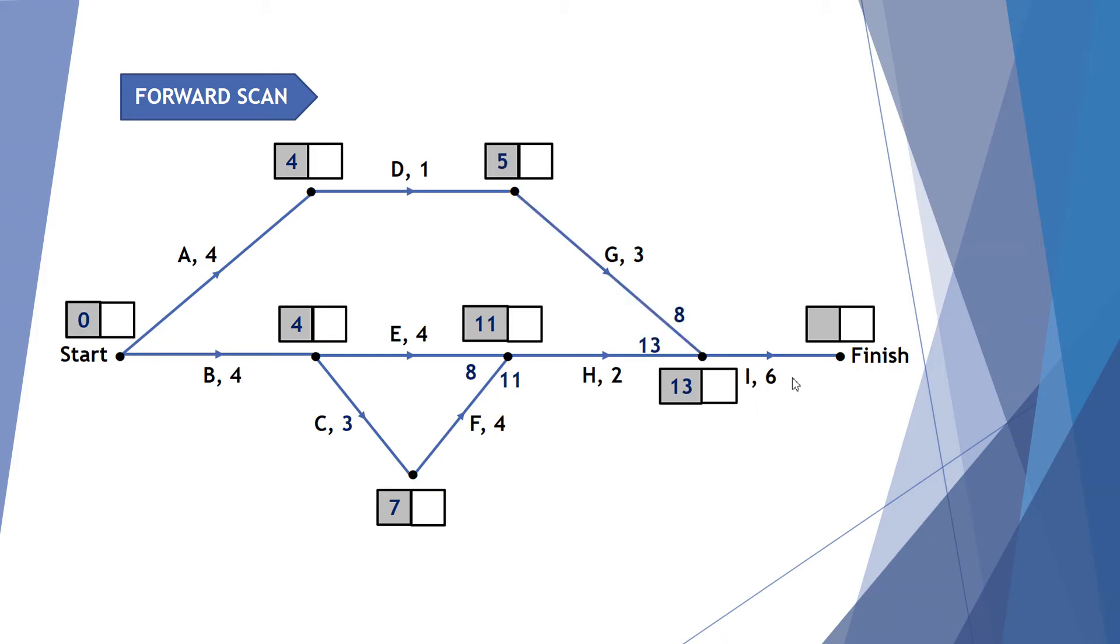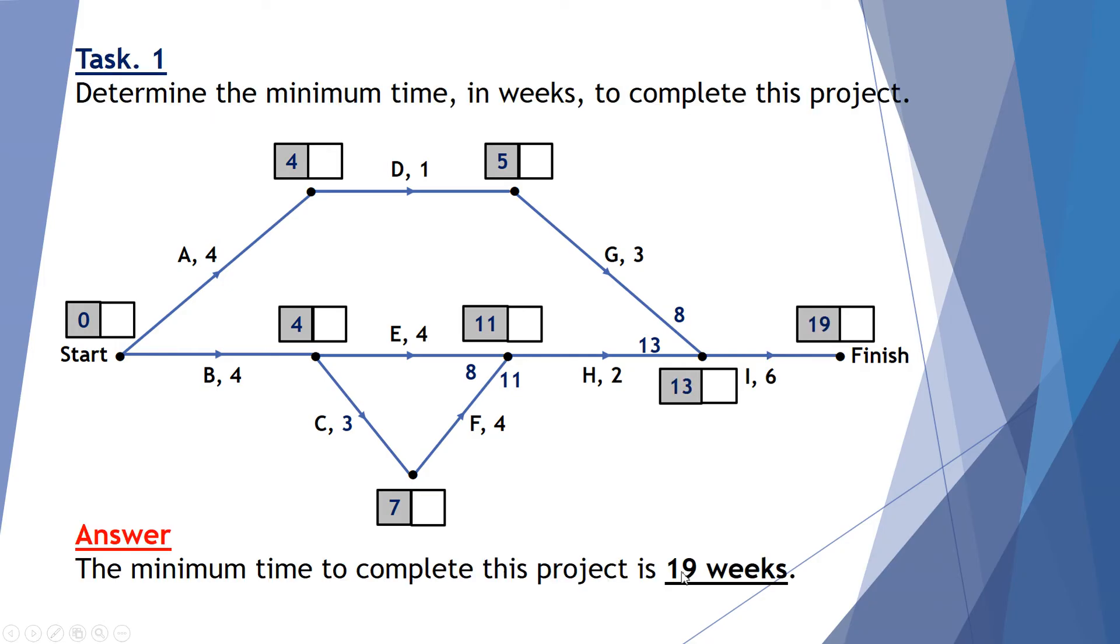Finally we look at our last step here which is activity I which takes a further six weeks. So six plus 13 gives me a total time of 19 weeks. So our forward scan starting at zero means it will take 19 weeks for everything in this particular project network to be completed. So the minimum time to complete this project is 19 weeks. We cannot get it done in any shorter time. Otherwise something in these activities will not be completed.